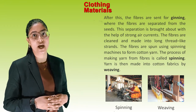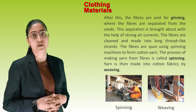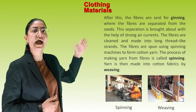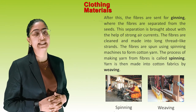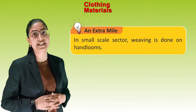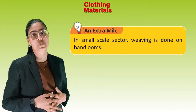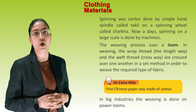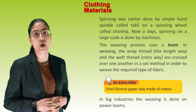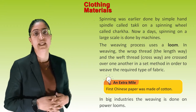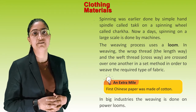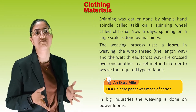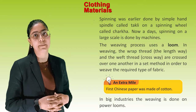The fibres are thinned and made into long thread-like strands. The fibres are spun using spinning machines to form cotton yarn — the process of making yarn from fibre is called spinning. Yarn is then made into cotton fabrics by weaving. In small-scale sectors, weaving is done on hand looms. Spinning was earlier done by a simple hand spindle called a takli, or on a spinning wheel called a charkha. In weaving, the warp thread (lengthwise) and the weft thread (crosswise) are crossed over one another in a set method to produce the required type of fabric.